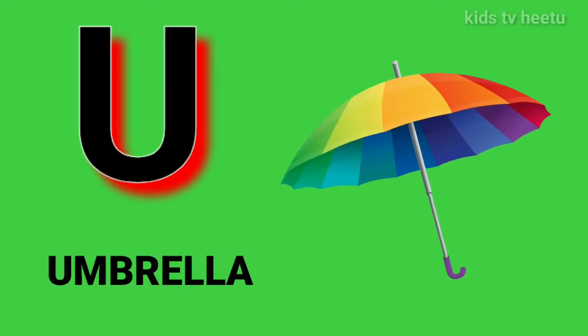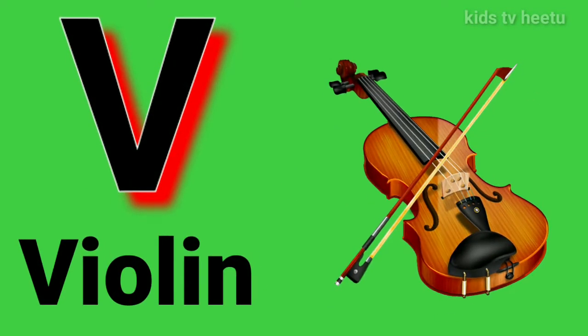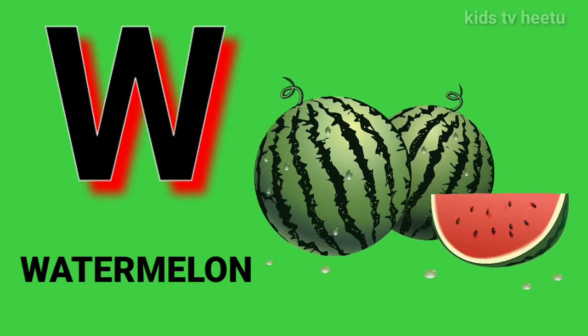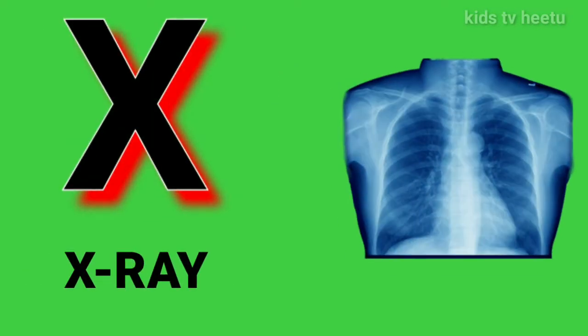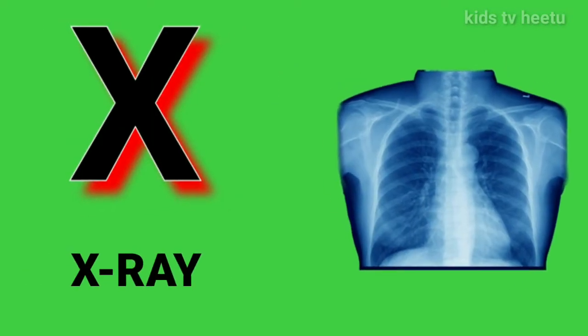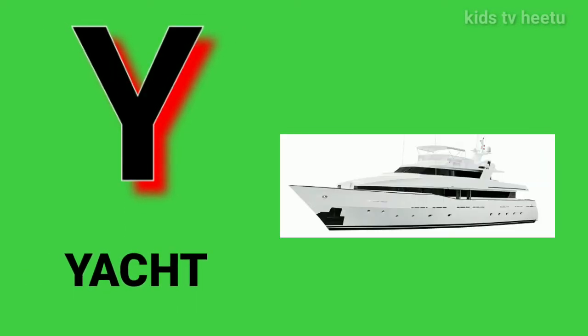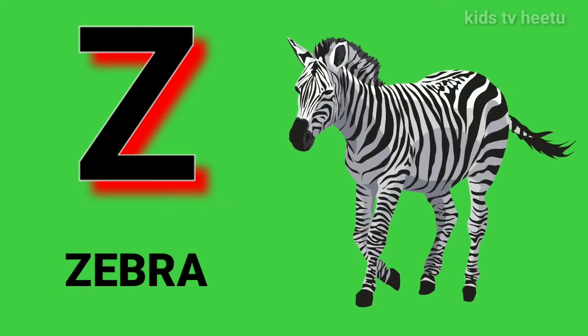U for umbrella, V for y, W for watermelon, X for x-ray, Y for yard, Z for zebra.